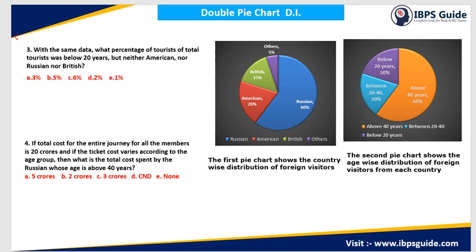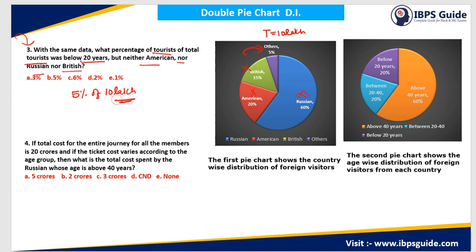Question 3: With the same data — total visitors 10 lakh — we have to find what percent of the total tourists was below 20 years but neither American, nor Russian, nor British. If they are not Russian, not American, not British, then they must be from other countries, and for other countries their total percentage is 5%. So I take 5% of 10 lakh, and they are asking about below 20 years which is 20%, so I take 20% of that.